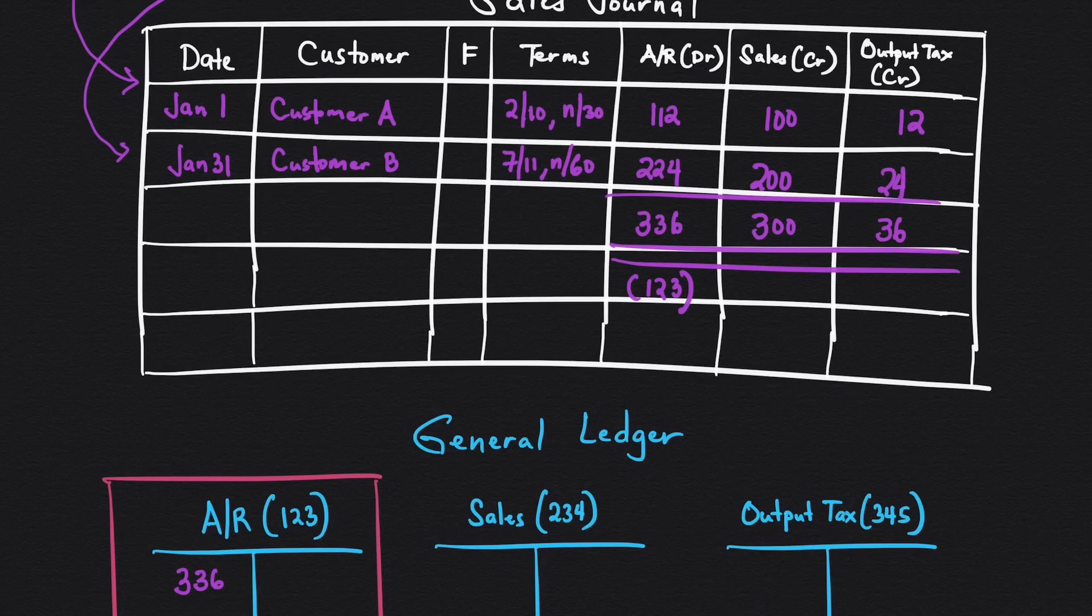For the sales, it's 300 credit, so place it here. After posting, write the account number underneath, so 234. And then finally, for output tax, that's 36 credit. So after posting, write the account number 345. So you are done posting the transactions in the general ledger.